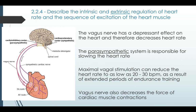The vagus nerve has a depressant effect on the heart, which decreases heart rate. The main responsibility of the parasympathetic system is to slow heart rate down. This vagal stimulation causes us to have a lower resting heart rate than 100 beats per minute, and with periods of extended endurance training, that can get as low as 20 to 30 beats per minute. The vagus nerve also decreases the force of each contraction, so less blood is pushed out with each beat.